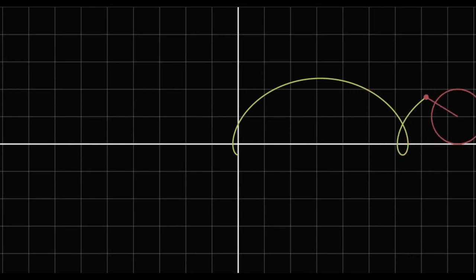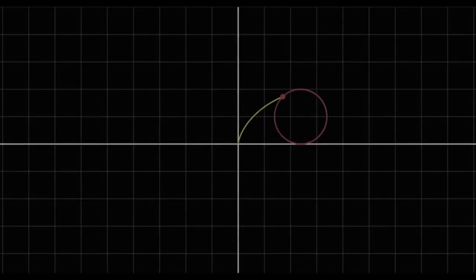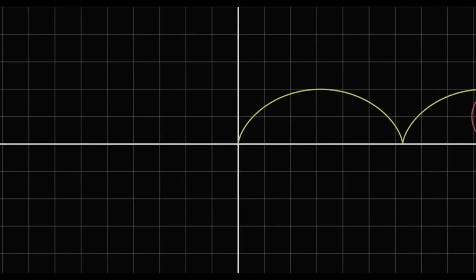If the point is outside the circle, the trochoid is called prolate and has a loop. If the point is on the circle, we obtain a cycloid or common trochoid, which we've already seen.